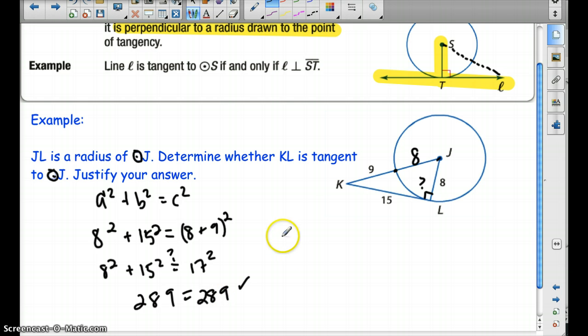It does end up working out. So yes, this is by theorem 10.10. This is a tangent line. KL is tangent. Let's try another one.